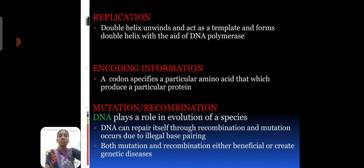First one is replication. The most important process of replication. The replication is DNA double helix unwinded and act as the template and form the double helix with action of DNA polymerase. Second one is encoding of information. The protein codes specific particular amino acid that produces the particular protein.